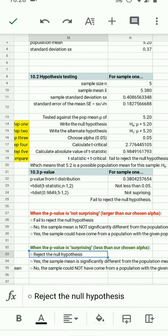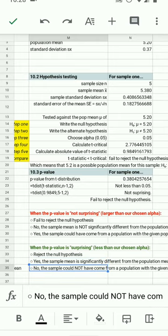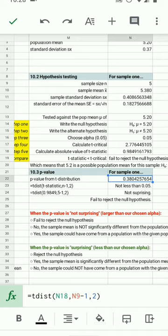When it is less than our chosen alpha, in our case 0.05, if it was smaller than 0.05, then we would reject the null hypothesis. We'd say the sample mean is significantly different. And we'd say, no, it could not have come from the population. We didn't have that in this case. We have a p-value that's larger than 0.05.